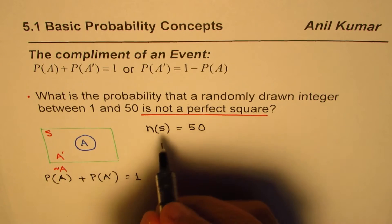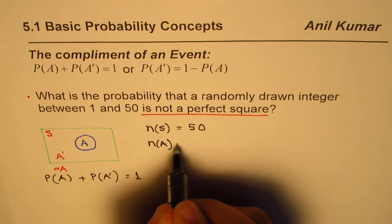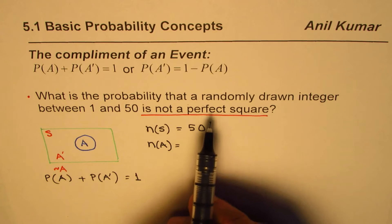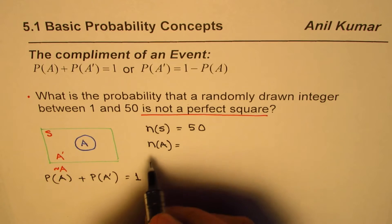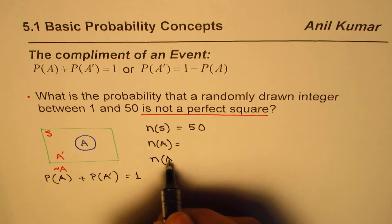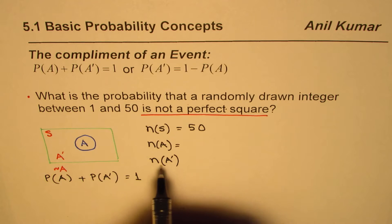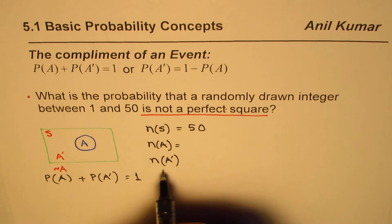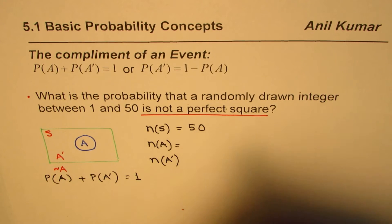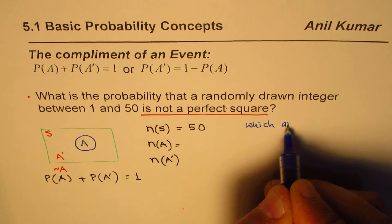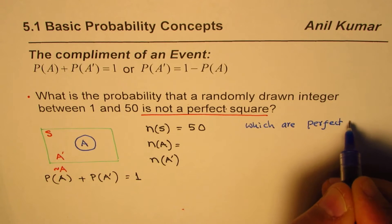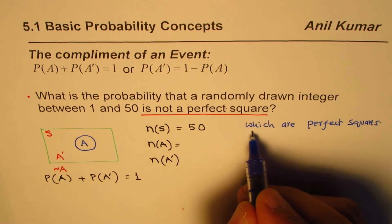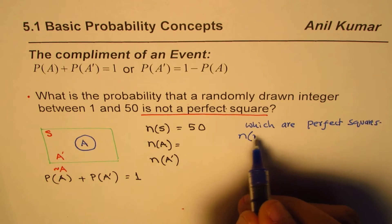We need to find outcomes that are not perfect squares. Since there are many such numbers, it is easier to count those which are perfect squares. We refer to this count as N of A prime — the complement — meaning we are looking for the perfect squares among 1 to 50.